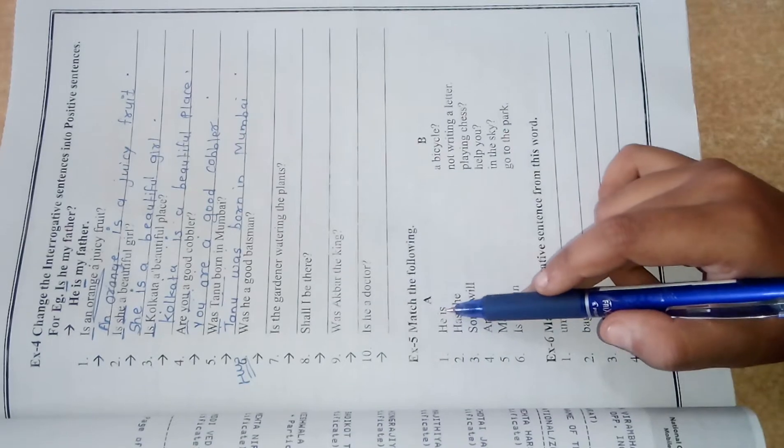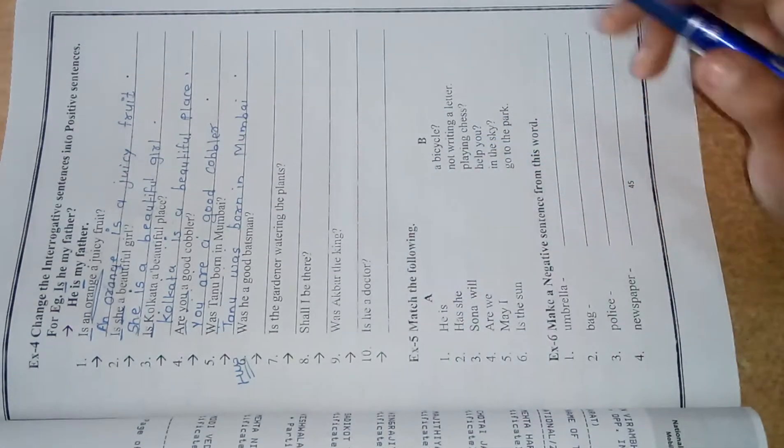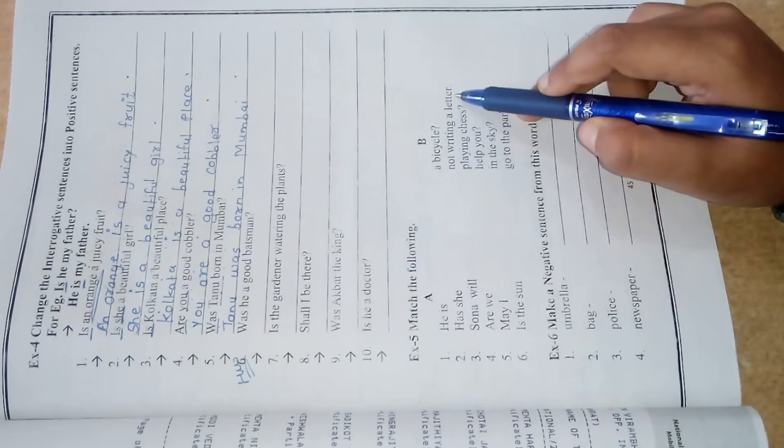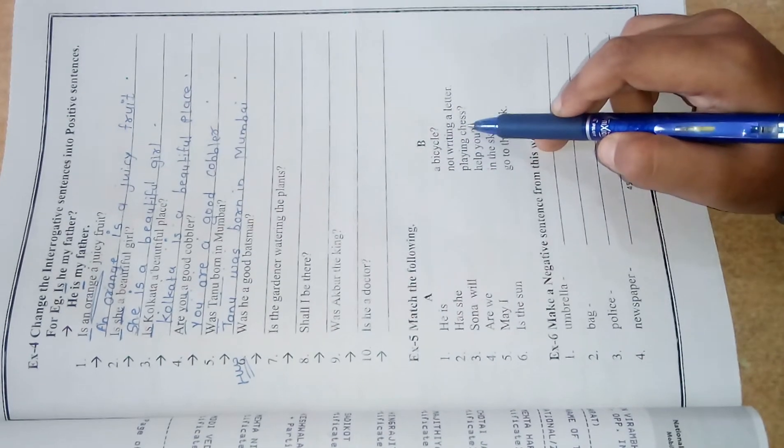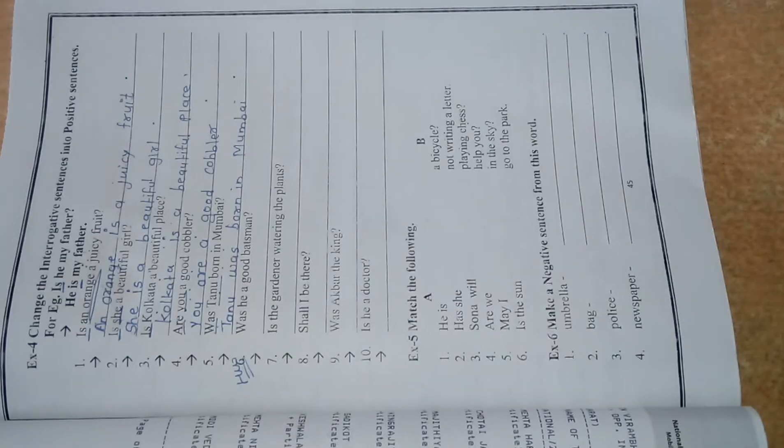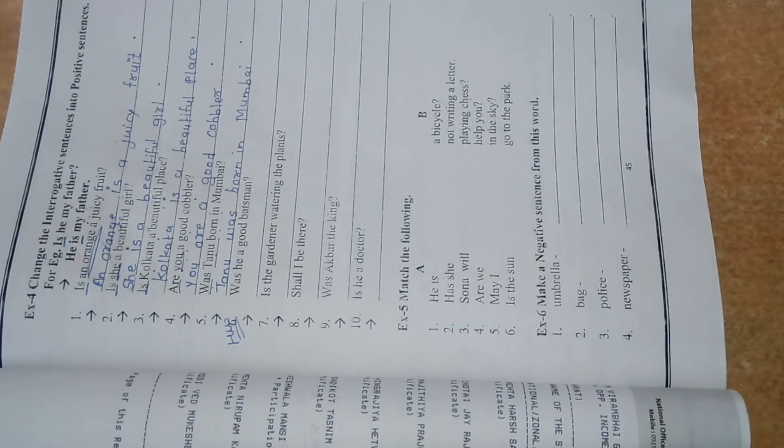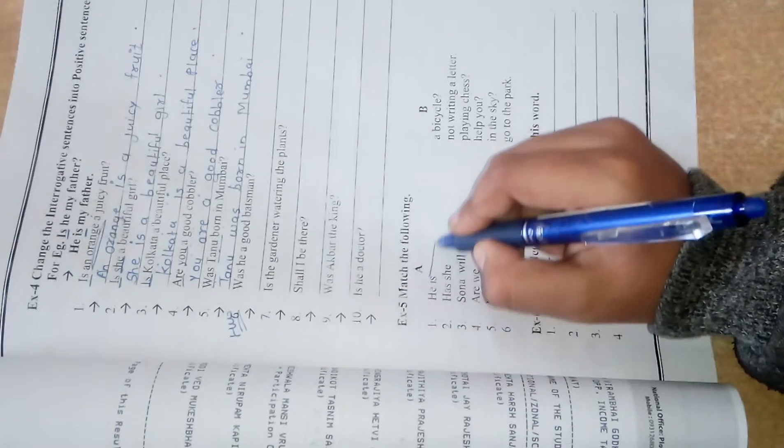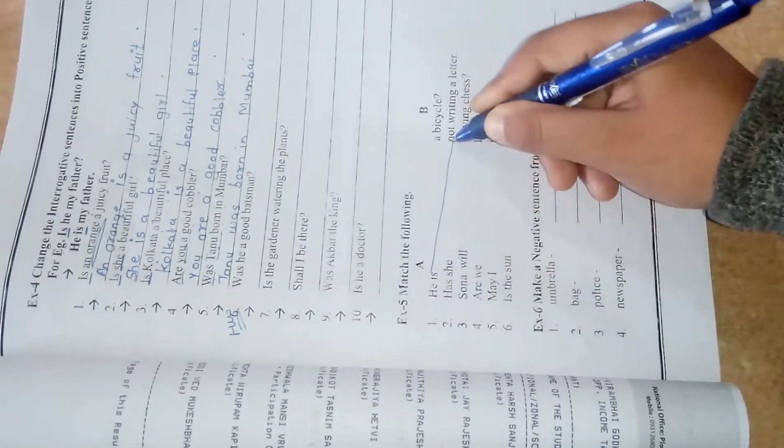Now look here. He is which is the perfect match? Bicycle, not writing a letter, playing chess, which is the correct answer. Here in the first it is written pronoun. So he is not writing a letter.